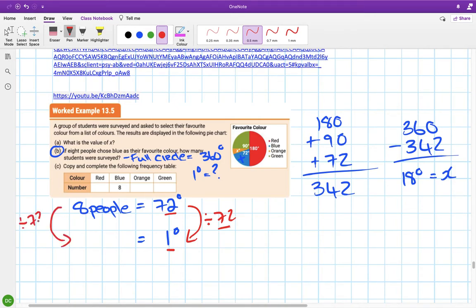I'm going to divide by 72. If I type in 8 divided by 72, I get a ninth - a ninth of a person.